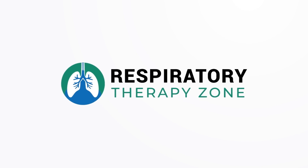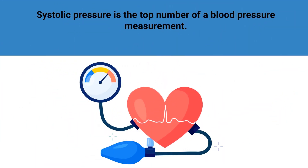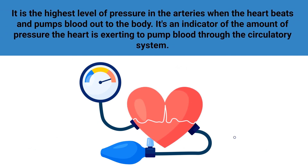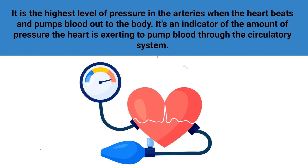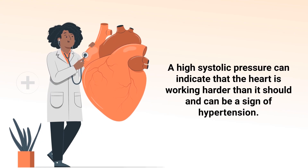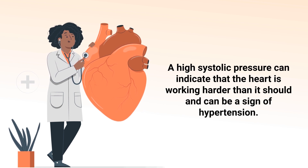Systolic blood pressure is the top number of a blood pressure measurement. It's the highest level of pressure in the arteries when the heart beats and pumps blood out to the body. It's an indicator of the amount of pressure the heart is exerting to pump blood through the circulatory system. A high systolic pressure can indicate that the heart is working harder than it should and can be a sign of hypertension.